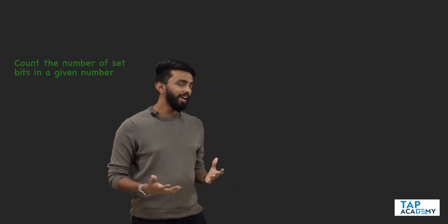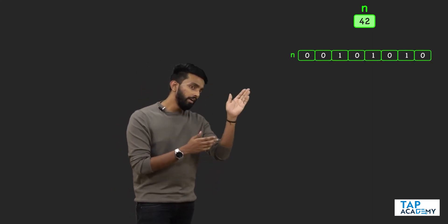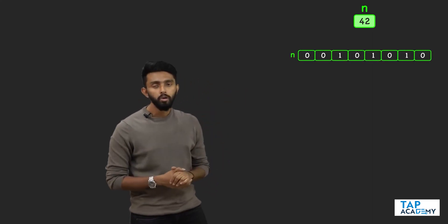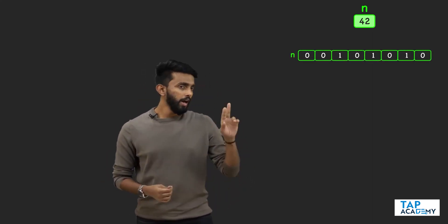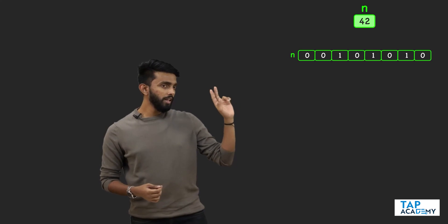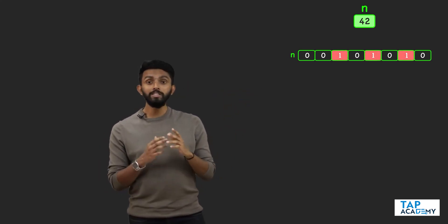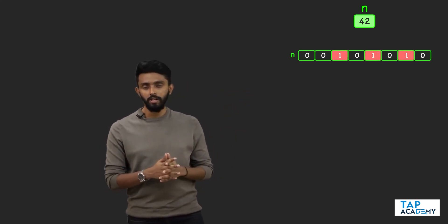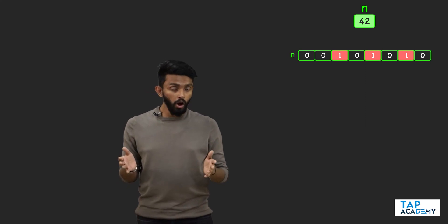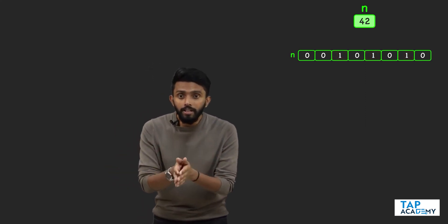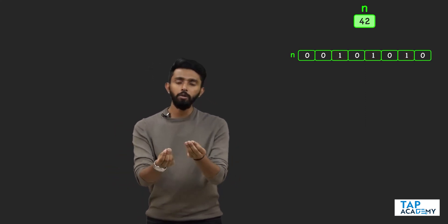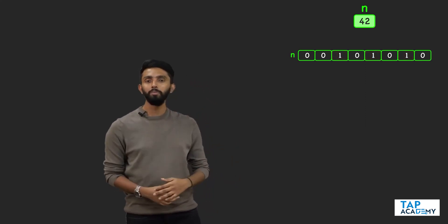Assume I have n which is 42. If I represent 42 in binary, this is how it looks like. As you can see, there are a total of three ones. So how many set bits are there? Three set bits, and that must be the output of your program.